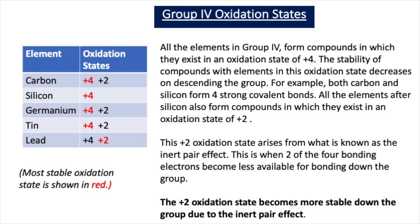In our previous videos, we've learnt that group 4 elements can either be in a plus 4 or plus 2 oxidation state, and the plus 2 oxidation state becomes more stable down group 4. This is due to the inert pair effect. You can see from this table that carbon has oxidation states of plus 4 and plus 2, and the plus 4 is the most stable oxidation state.